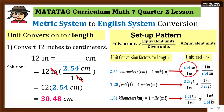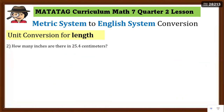Yan na po yung ating number equivalent unit — so 30.48 centimeters ay may katumbas na 12 inches. Ibig sabihin, isang ruler po yan — one foot po yan. Okay, next number two: how many inches are there in 25.4 centimeters?